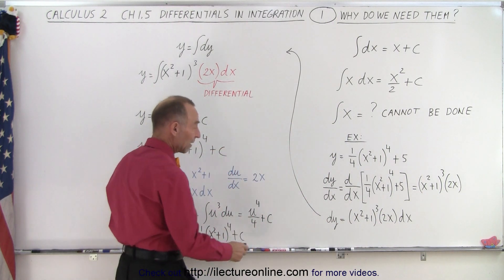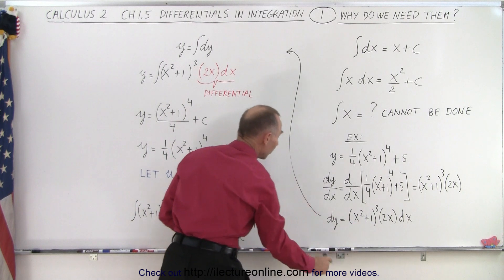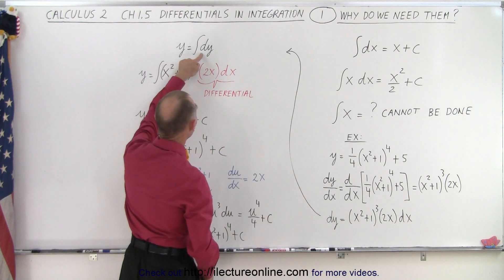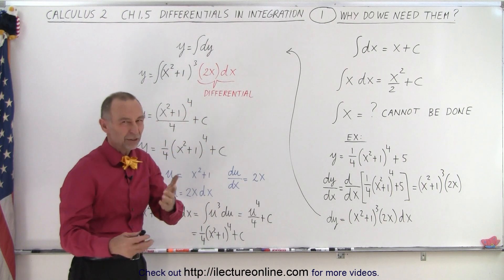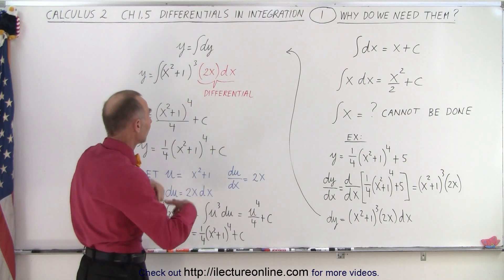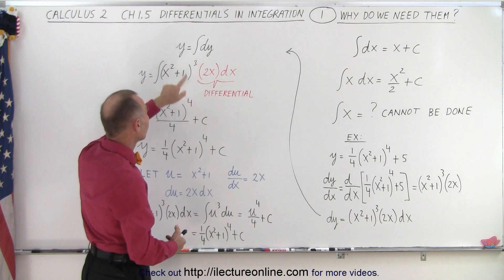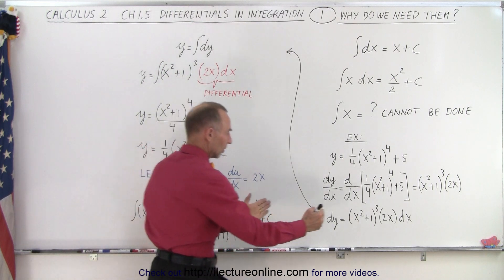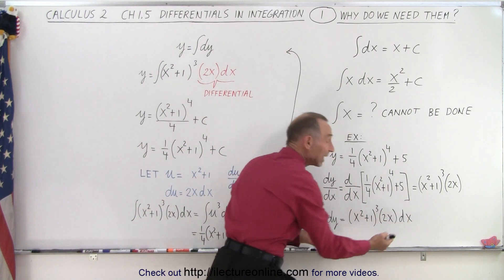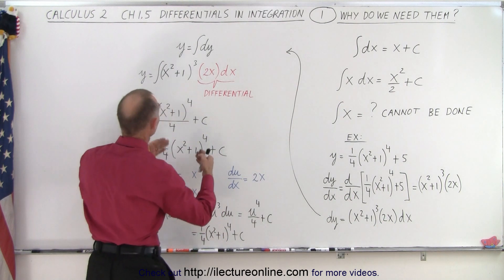Now realizing that we have dy there which is equal to this, so what if I take this and I integrate dy? Well I should get y back, plus a constant of integration, but if we integrate dy we get y. So if we integrate this, we should get y back, the original function.